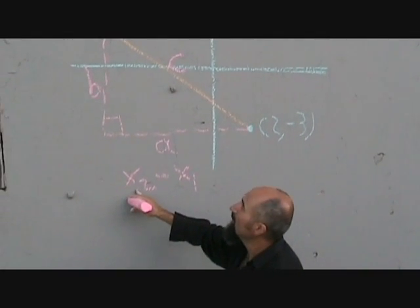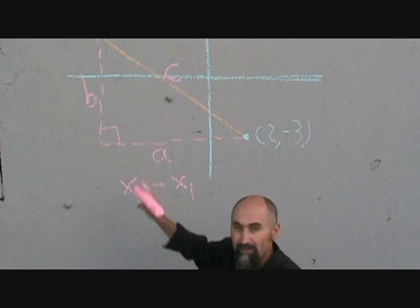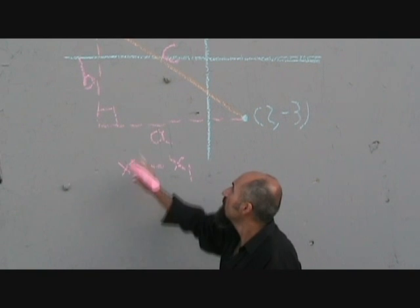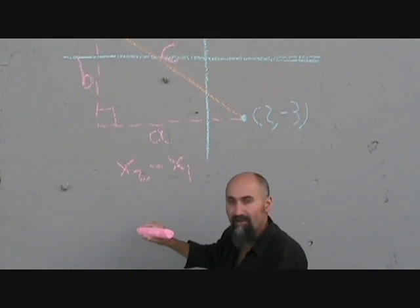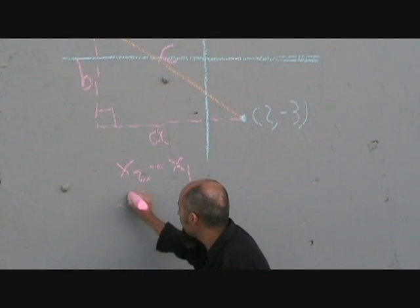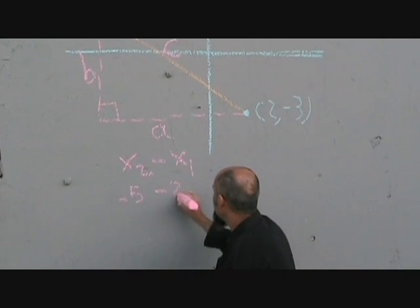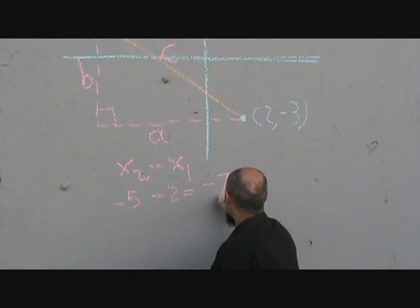Now x2, you can choose either one to be x2 and either one to be x1. It doesn't make a difference because the value stays the same. So let's choose negative 5 as our x2. So this becomes negative 5 minus 2, which gives us negative 7.